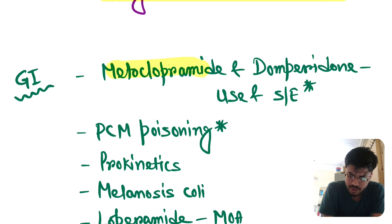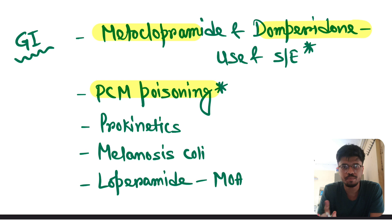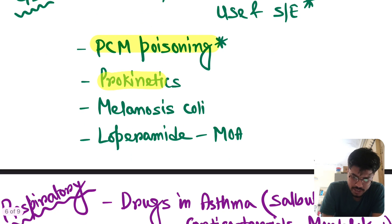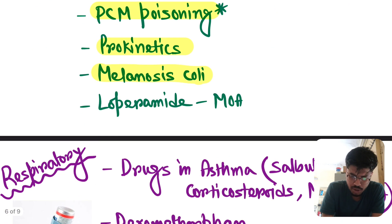In GI, metoclopramide, domperidone. Very very important. In every year, you can get a question either from metoclopramide or domperidone. Very very important. PCM poisoning. Again important topic. Prokinetics. Melanosis coli, loperamide, mechanism of action.